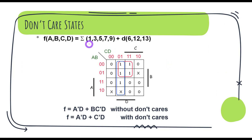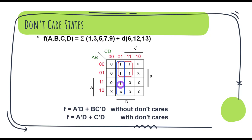Consider this example. The function is in sum-of-products form. The minterms are 1, 3, 5, 7, and 9 — these are the five main terms. We also have three don't care states: 6, 12, and 13. You can see them marked here in the K-map.